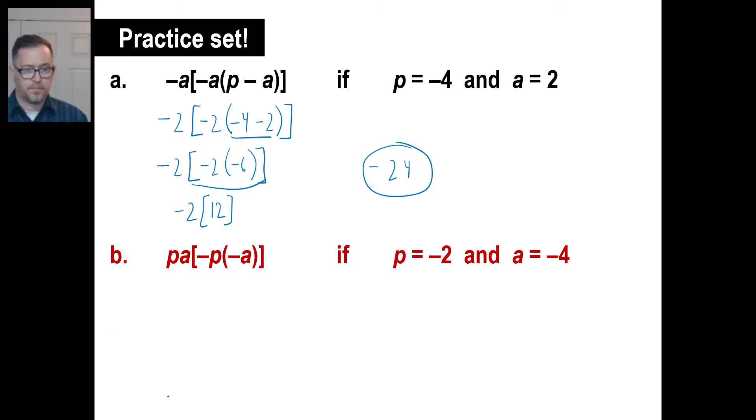All right. B, let's take a look. P is negative 2 and a is negative 4. Well, you know, if you just put pa, that means p times a. Well, negative 2 times negative 4 is positive 8. And that's what goes on the outside. There's your bracket. The opposite of p is going to be positive 2, and the opposite of a will be positive 4. Inside here, we have 2 times 4, which is 8. And then 8 times 8 is 88. No, it's not. It's 64. Just check it.